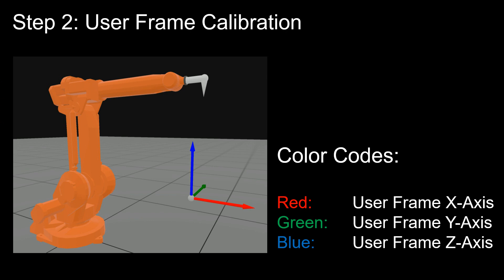The second step in the calibration is to define the user frame. Again, we see this coordinate system in the station here. And the red axis is the user frame X-axis, the green is the user frame Y-axis, and the blue is the user frame Z-axis.